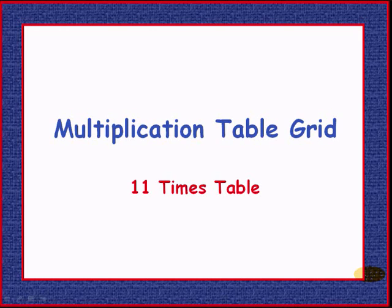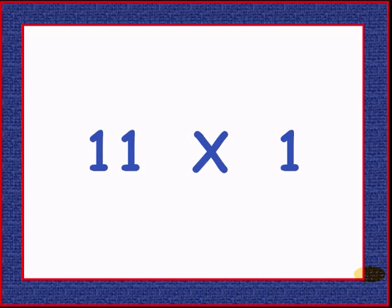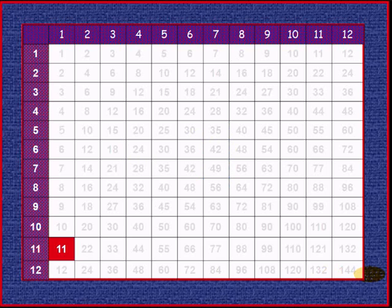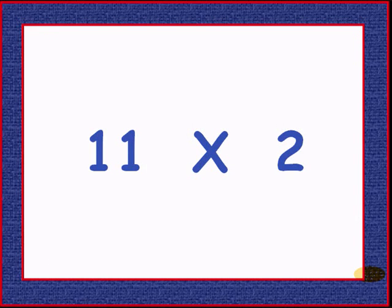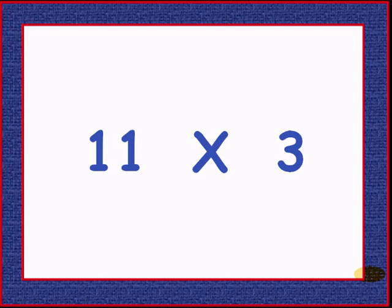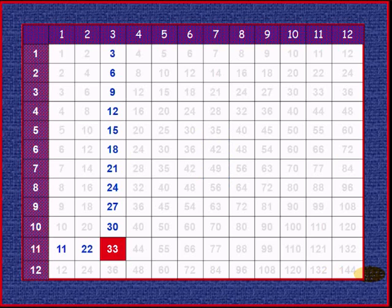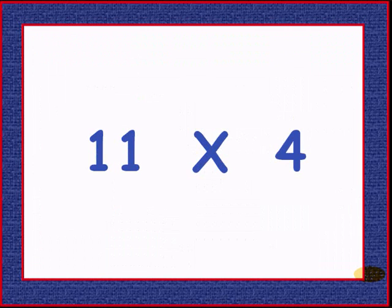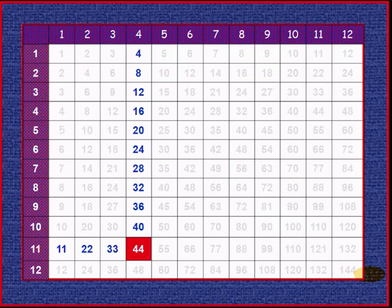Let's start on 11 times table. 11 times 1 is 11. 11 times 2 is 22. 11 times 3 gives 33. 11 times 4 gives 44.